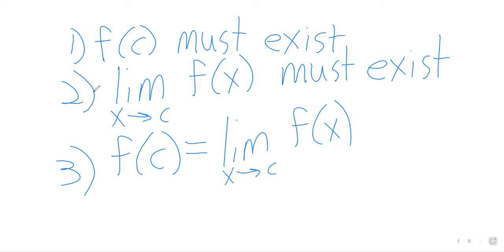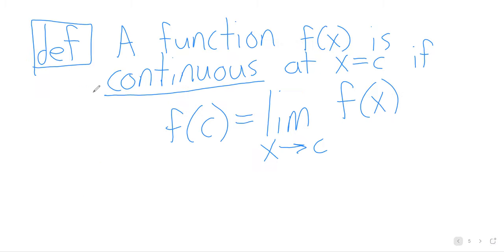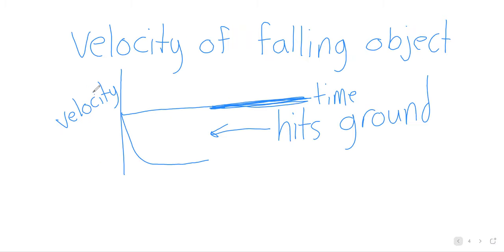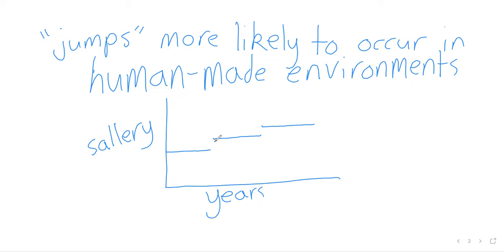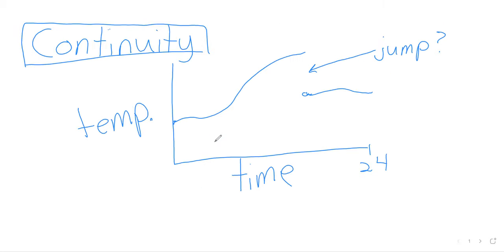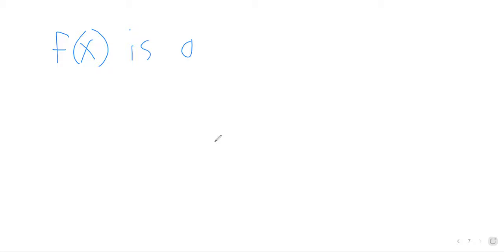And what we've been seeing — this jump here, these jumps here, and this jump here — are all failures of continuity. So you can probably guess the following definition. The opposite of continuous is discontinuous.